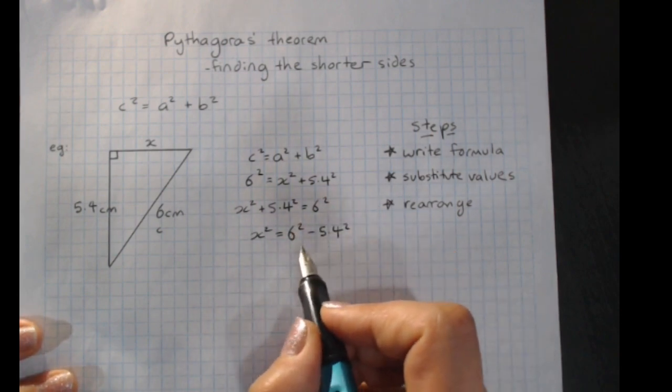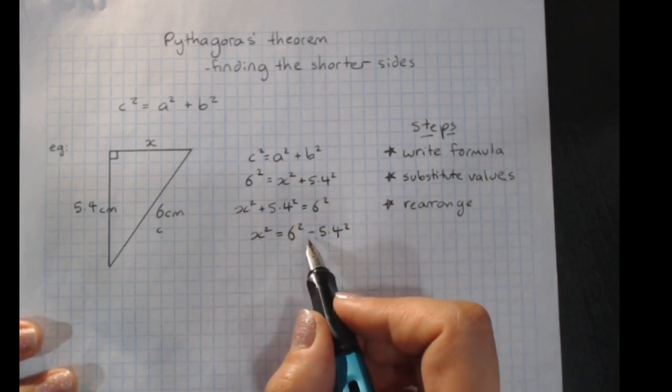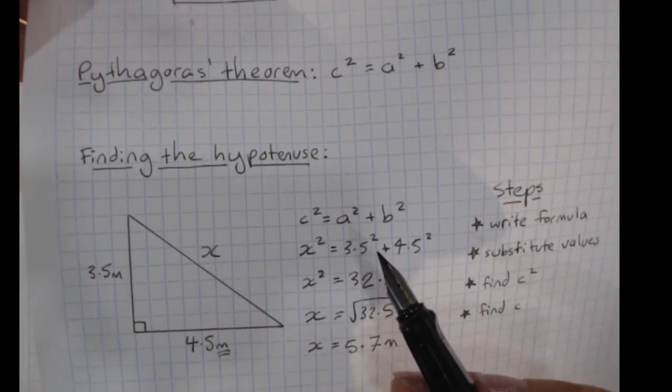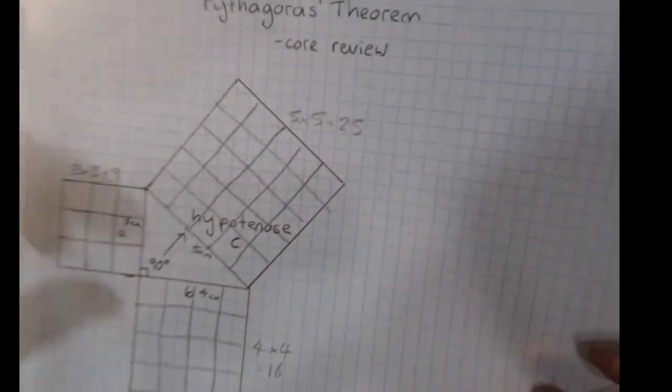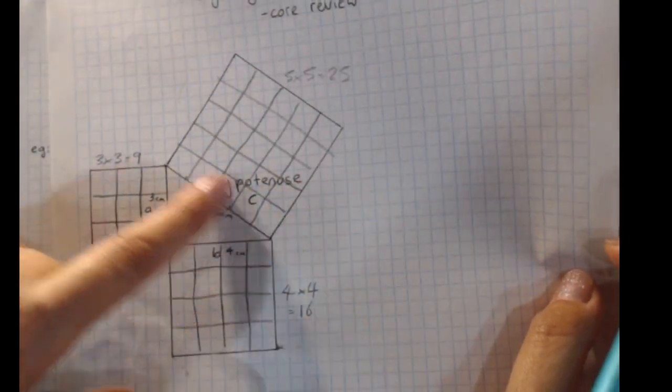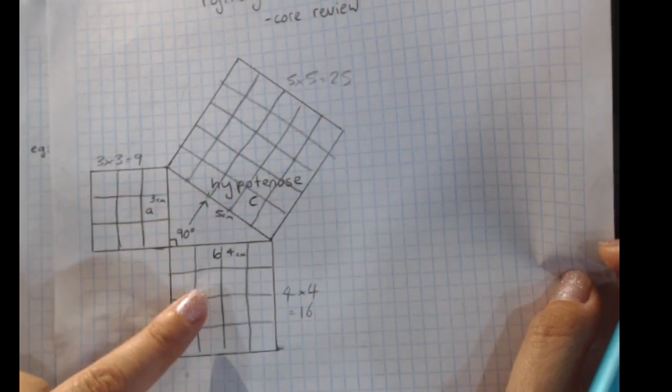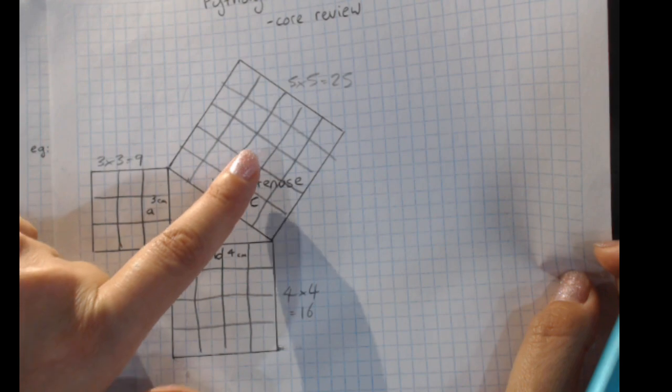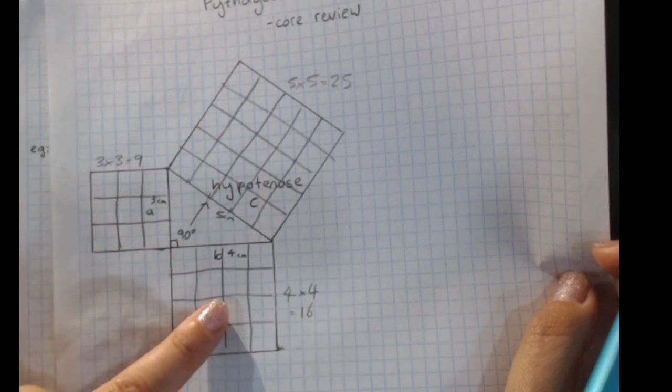And you'll see we've got a subtraction here now. Whereas before when we were finding the hypotenuse, we had a plus. And that makes a lot of sense. The big square is that square plus that square. So a little square has to be the big square minus the other little square.